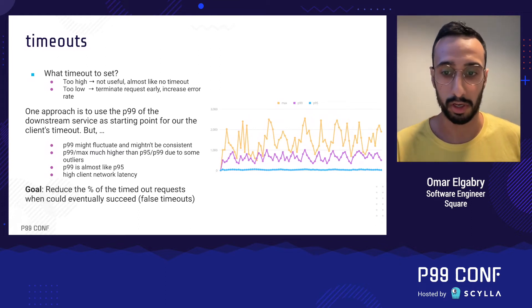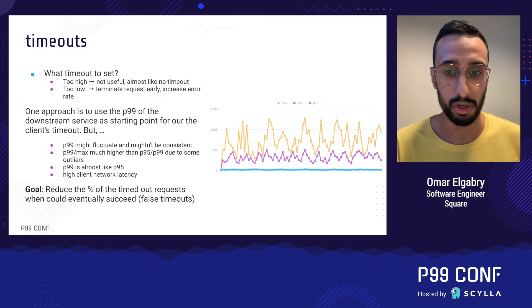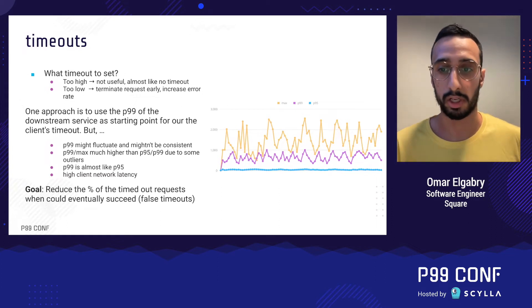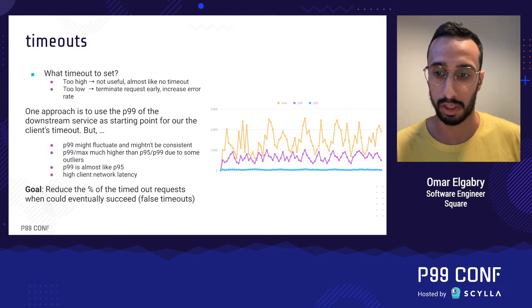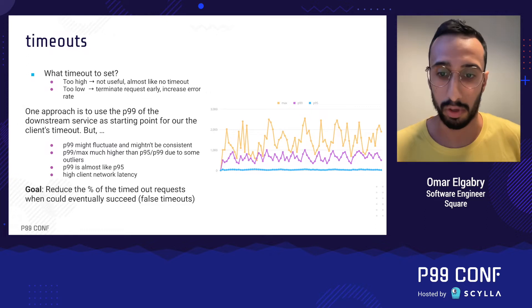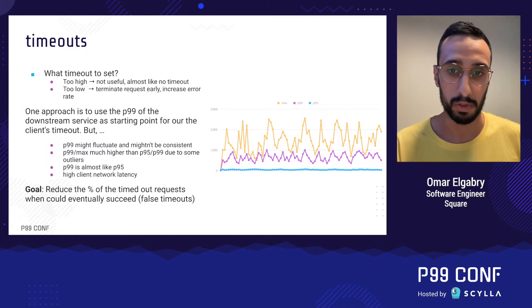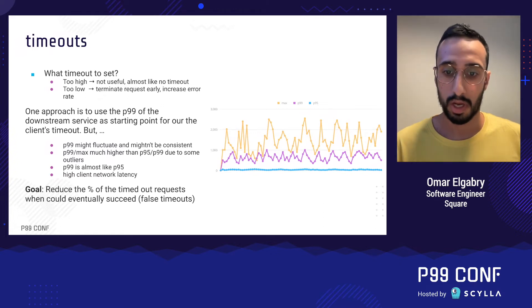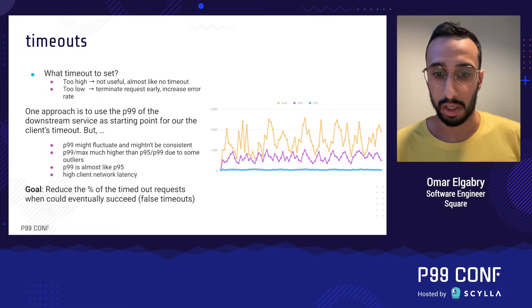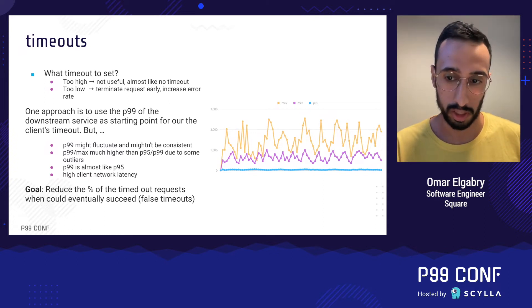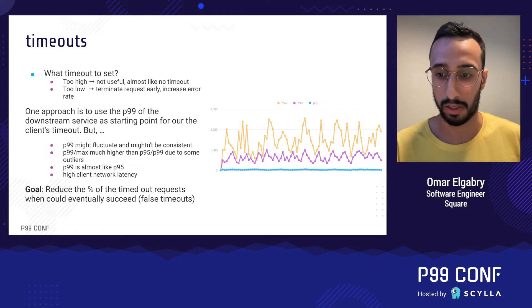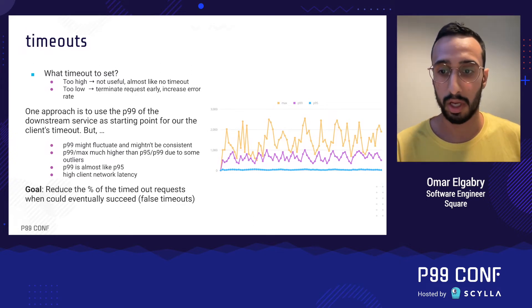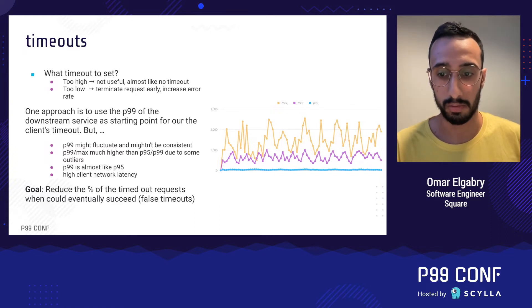Another case is where the maximum latency is much higher than the P95 or P99 due to outliers. We do not want a timeout that's too high or one that accounts for these outliers — instead, we fail the request fast and retry, hoping it won't take as long next time. If there's high client network latency, the timeout should be padded with a reasonable worst-case network latency. For example, if the P99 is under one second but maximum latency is higher and fluctuates, a one-second timeout makes sense since longer requests appear to be outliers.